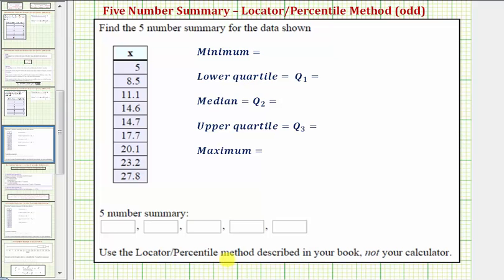The locator percentile method is not the same as the one used by the TI-84, so we don't want to use our calculator to define Q1 and Q3 because sometimes it will give us different values.